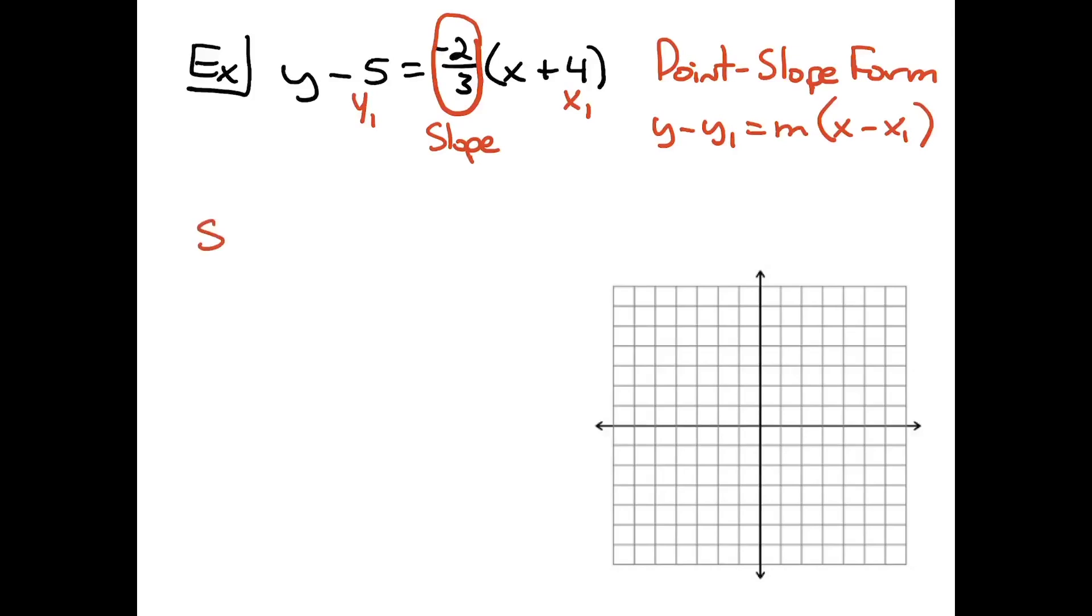So my slope, let's identify that. That we said was negative two-thirds. And my point that is on this equation will be the ordered pair: I see x sub 1 being positive 4 in that equation, so I'm going to use negative 4. And then the y value, I see negative 5 in the equation, so I'm going to use positive 5. Those two pieces of information will allow me to graph the line.